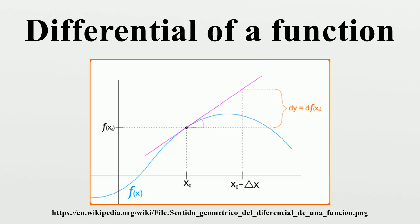A number of properties of the differential follow in a straightforward manner from the corresponding properties of the derivative, partial derivative, and total derivative. These include linearity: for constants a and b and differentiable functions f and g. And the product rule: for two differentiable functions f and g. An operation d with these two properties is known in abstract algebra as a derivation. They imply the power rule. In addition, various forms of the chain rule hold, in increasing level of generality.